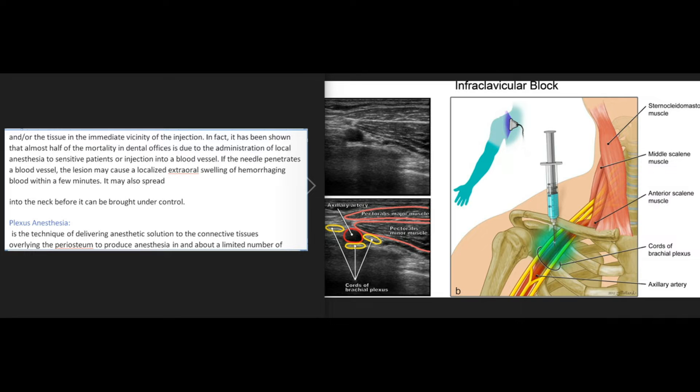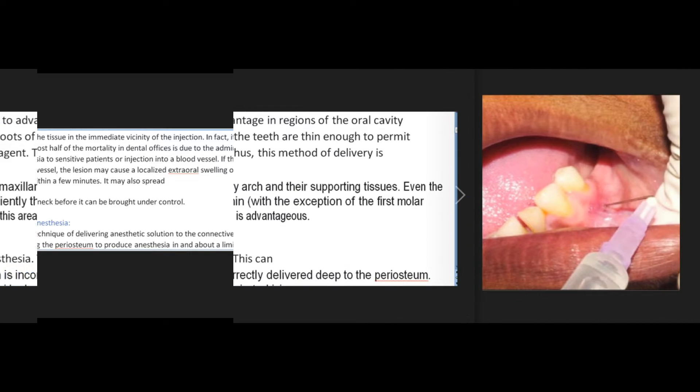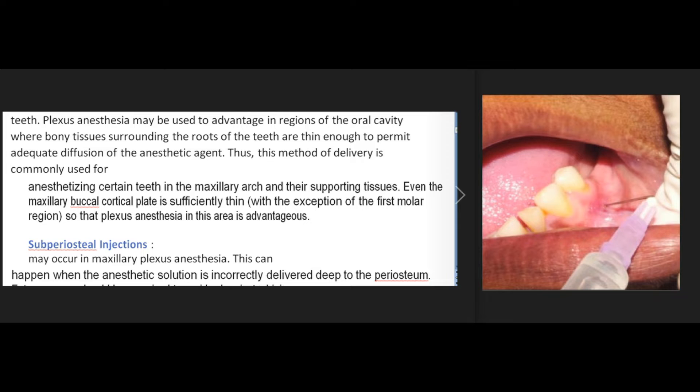Plexus anesthesia is the technique of delivering anesthetic solution to the connective tissues overlying the periosteum to produce anesthesia in and about a limited number of teeth. Plexus anesthesia may be used to advantage in regions of the oral cavity where bony tissues surrounding the roots of the teeth are thin enough to permit adequate diffusion of the anesthetic agent. This method of delivery is commonly used for anesthetizing certain teeth in the maxillary arch. The maxillary buccal cortical plate is sufficiently thin, with the exception of the first molar region, so that plexus anesthesia in this area is advantageous.